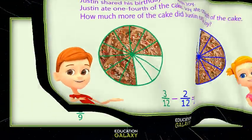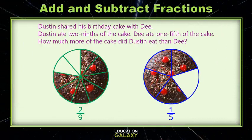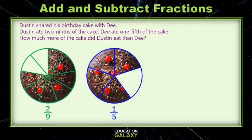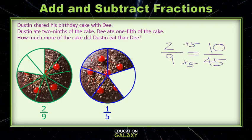Let's do one of these together. Now we've got Dustin with the same cake. So Dustin's going to share his cake with D. He ate 2 ninths, she ate 1 fifth. Those look real close, but let's find out how much more he ate. The best case for common denominators here will be to multiply the 9 and the 5. To get from 2 ninths to something with a 45 in the denominator, we need to multiply by 5. We do that top and bottom and we get 10 45ths.